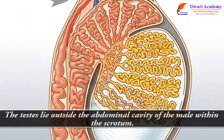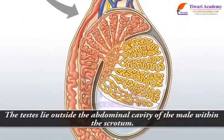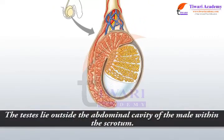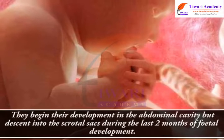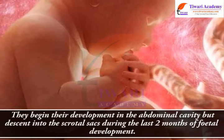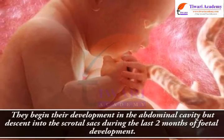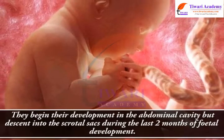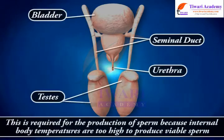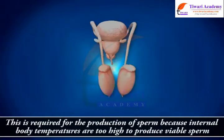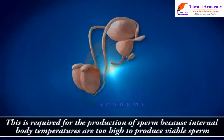The testes lie outside the abdominal cavity of the male, within the scrotum. They begin their development in the abdominal cavity but descend into the scrotal sacs during the last two months of fetal development. This is required for the production of sperm, because internal body temperatures are too high to produce viable sperm.